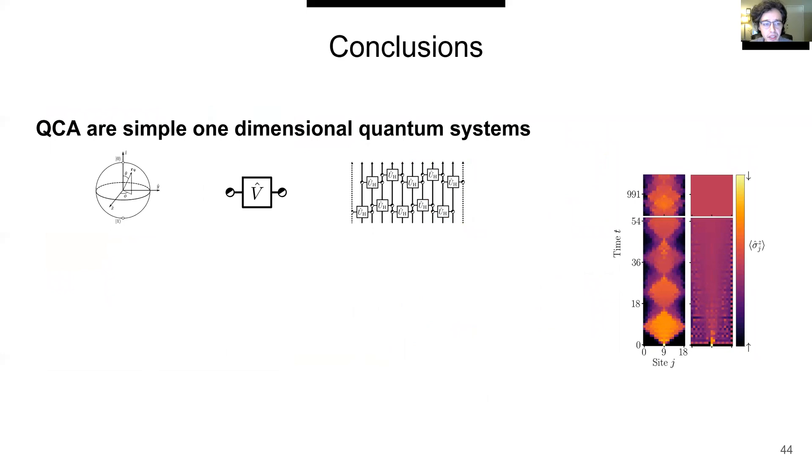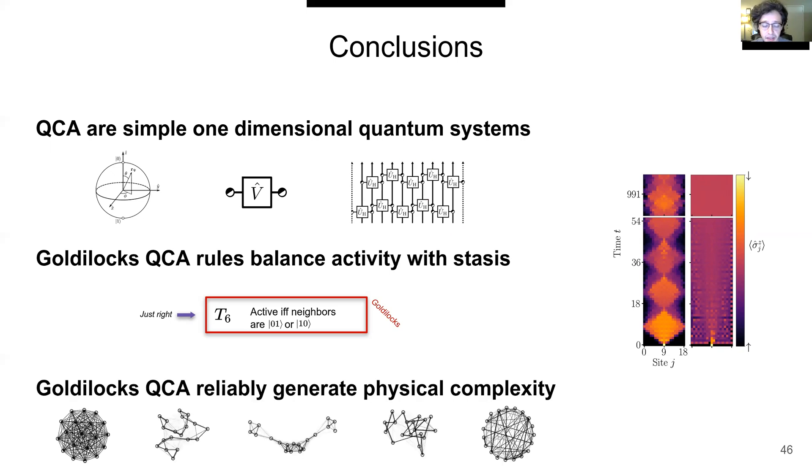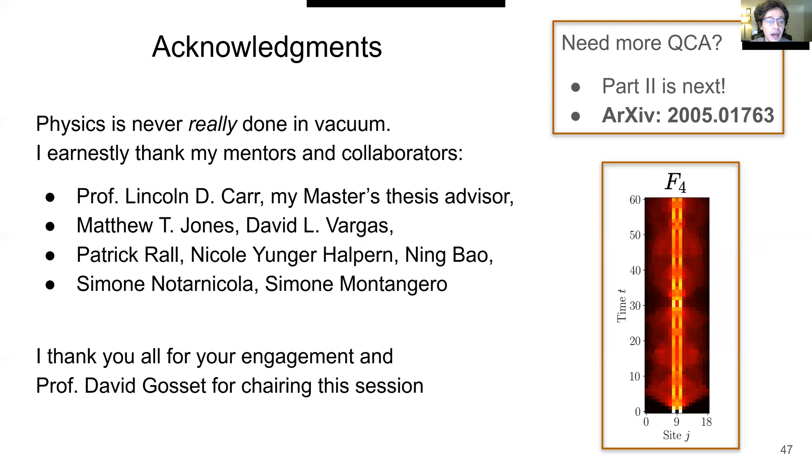In conclusion, quantum cellular automata, as we have defined them, are simple one-dimensional quantum systems. Goldilocks QCA are those rules which balance activity with stasis, and furthermore, Goldilocks QCA are those that can reliably generate physical complexity. I would like to earnestly thank my mentors and collaborators for this work, and I thank you all for your engagement. If you need more QCA, check out part two of this series, and also check out our archive paper. Thank you very much.